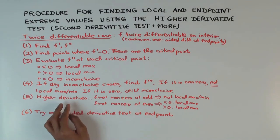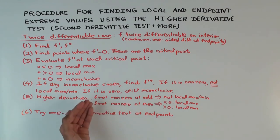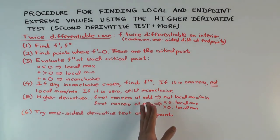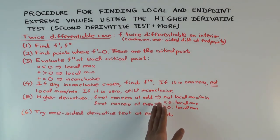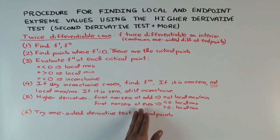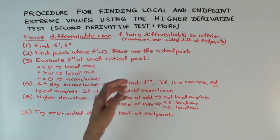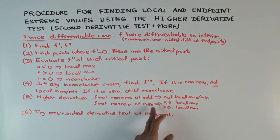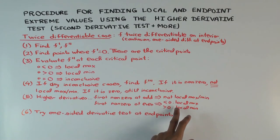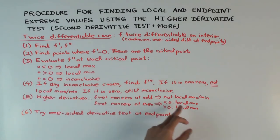For any critical point, if the first time you get a non-zero derivative value is at an odd position — like the third or fifth — then it's not a local max or min. If the first non-zero derivative value occurs at an even position — like the second, fourth, sixth, or eighth — then it is a local max or min. The sign condition is the same as for the second derivative test: less than zero means local max, greater than zero means local min.